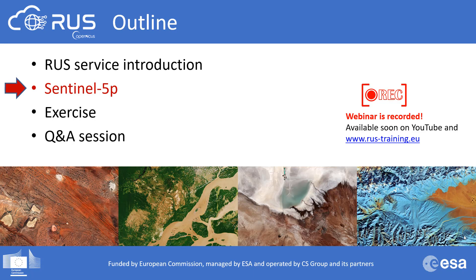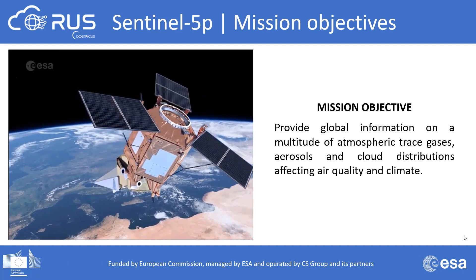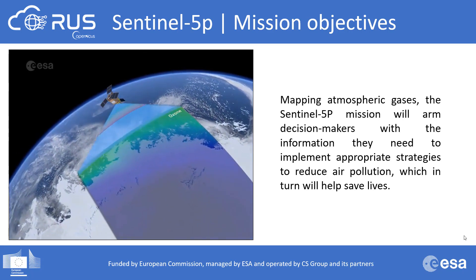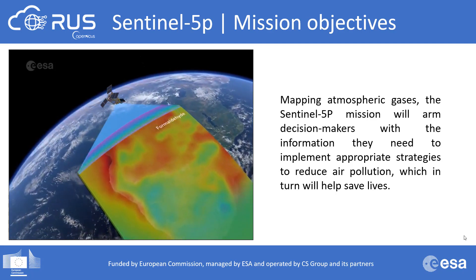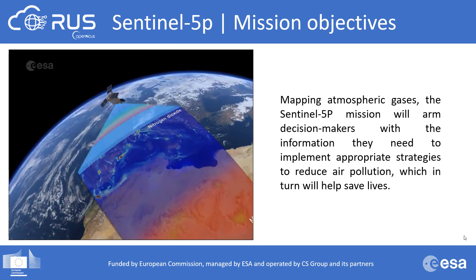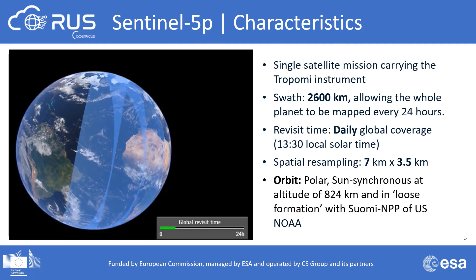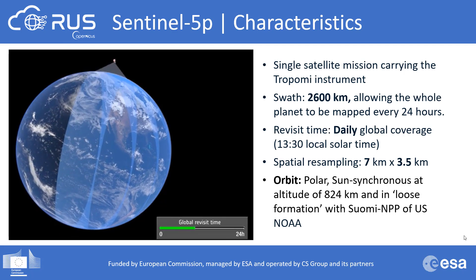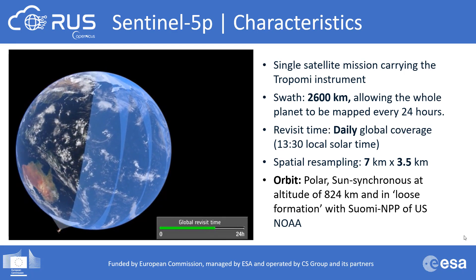Sentinel-5P, or Sentinel-5's Precursor, is the first Copernicus mission dedicated to monitoring our atmosphere, mapping a multitude of air pollutants around the globe. Launched in October 2017, it reached routine operation in early 2019, aiming to fill the data gap between the retirement of the Envisat satellite, NASA's Aura mission, and the upcoming Sentinel-5. It carries the state-of-the-art TROPOMI instrument. It is a single satellite mission with a swath of 2,600 kilometers, a daily revisit time, and a spatial resolution of 7 by 3.5 kilometers.